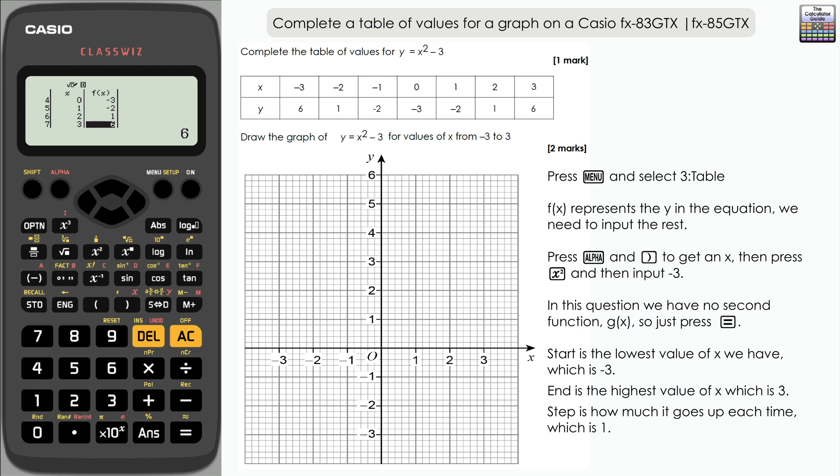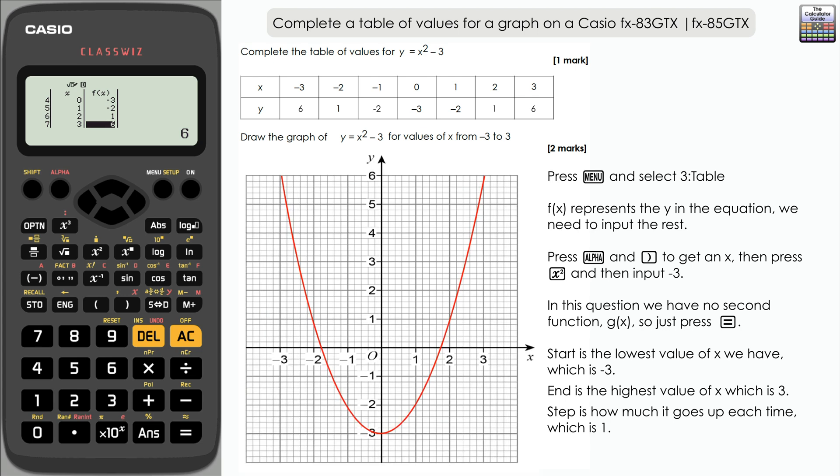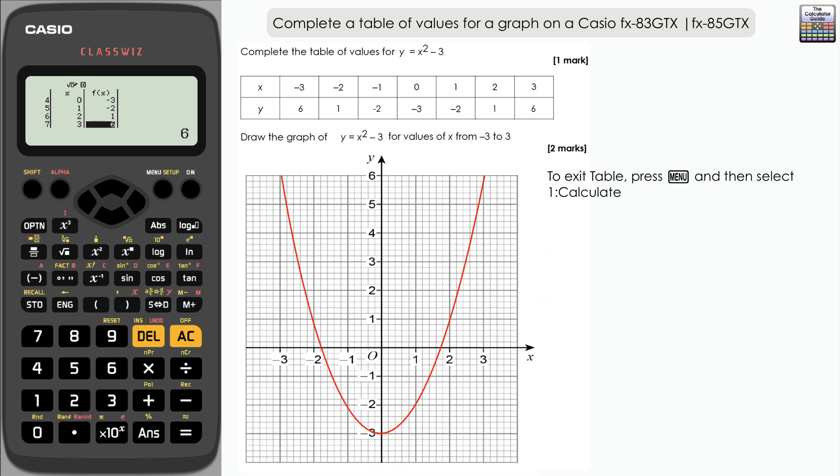And corroborate what we've got on the calculator with the ones that are already filled in in the table. And from there we've then got a table with coordinates that we can then plot, and from there we need to draw the graph, which in this case is a quadratic graph with a nice smooth curve.